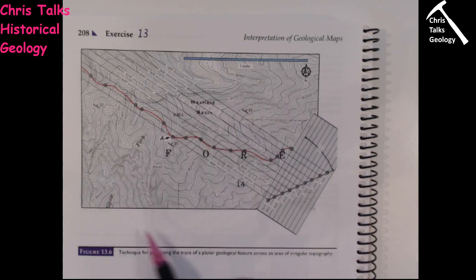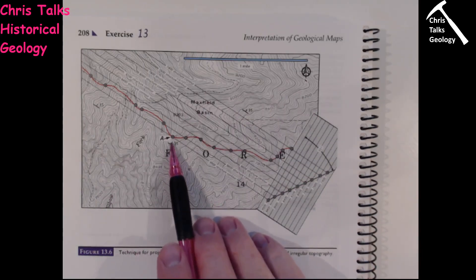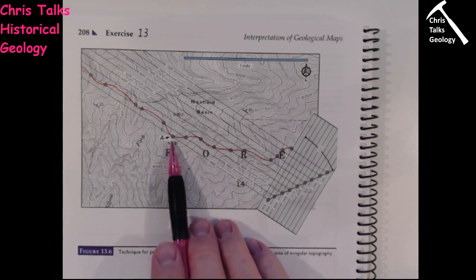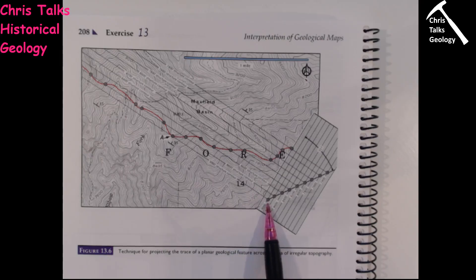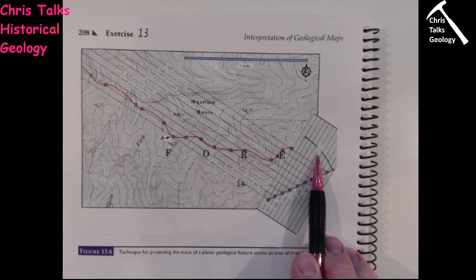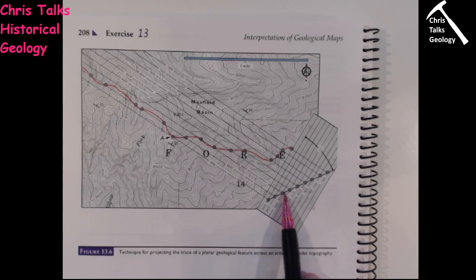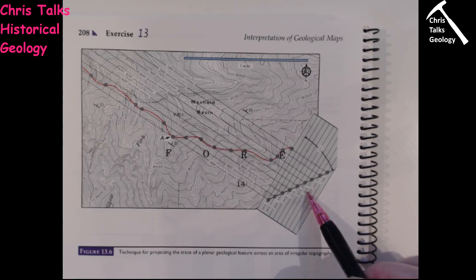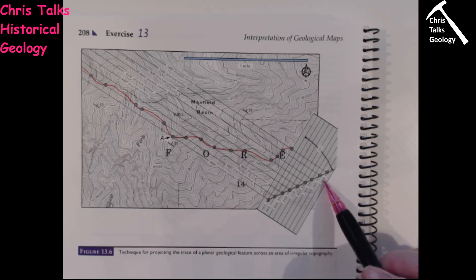We're on a topographic map here. Point A is at 9000 meters — we come along, draw a line, and mark 9000 meters as our starting point at the top of the graph paper. From this point we draw a diagonal line at 35 degrees, based on the dip of our layer of rock, and we'll mark where it crosses certain elevations: 8800, 8600, 8400, 8200, 8000, 7800, 7600, 7400, and so on.